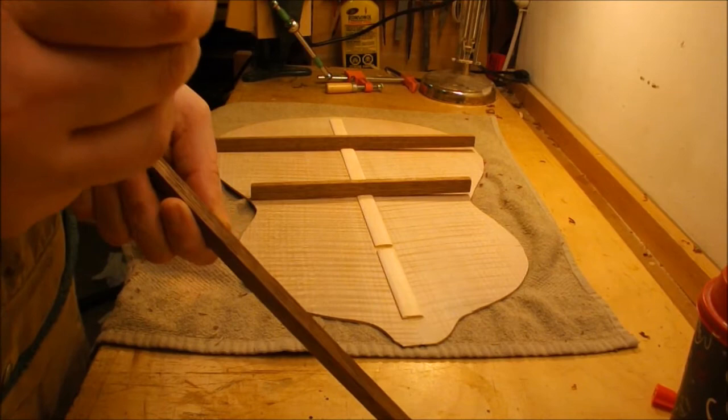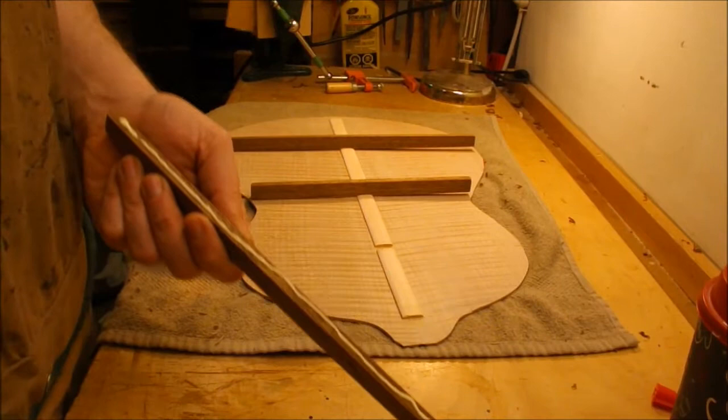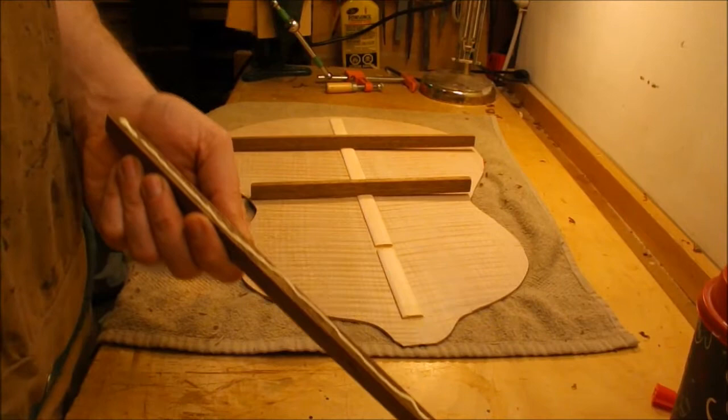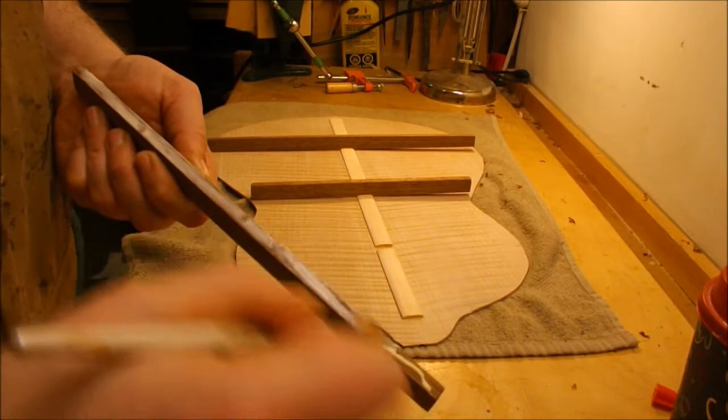After that we'll get some glue on them. I'm using a tight bond style aliphatic glue. You can see that I've planed the braces into the 20 foot arc of the back radius, which is kind of a moderate curve. I don't like a really extreme radius on the backs.